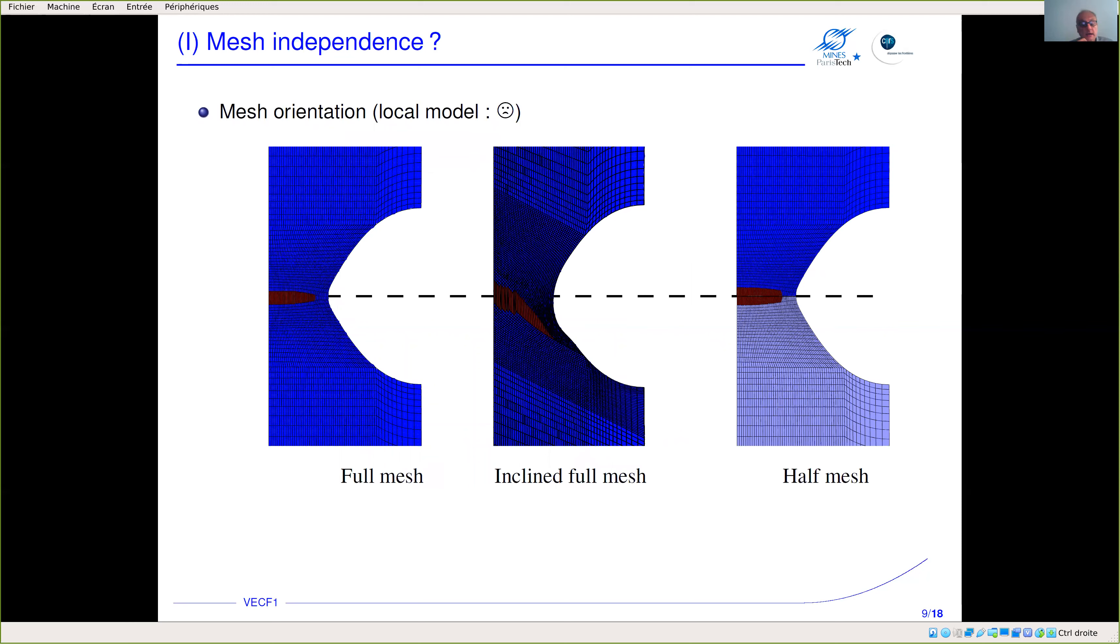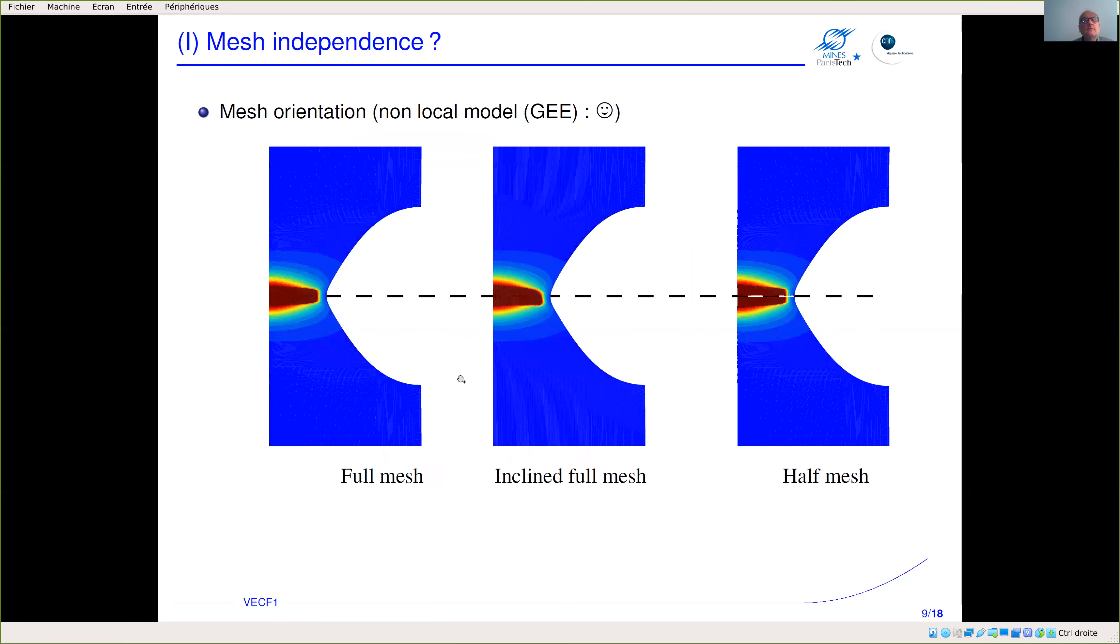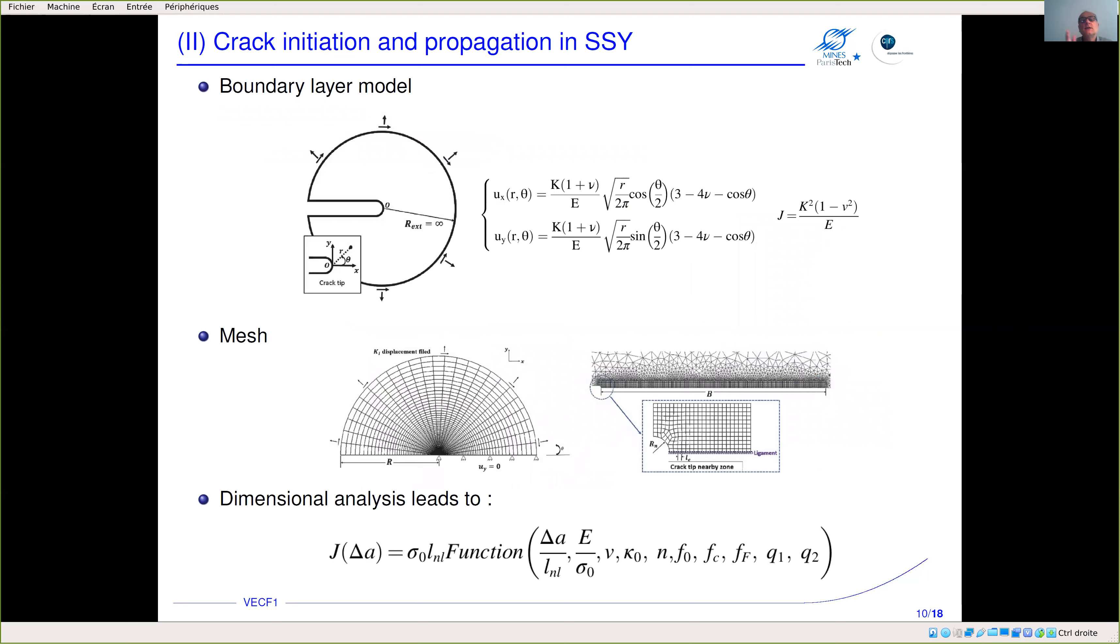Do we solve the problem linked to mesh orientation? This is a slide you have already seen with the effect of a full regular straight mesh and a full inclined mesh. We use the non-local model and this nicely solves the problem—you have a straight crack in all cases. In that case it's very thick but it depends on the damage parameters you are using.